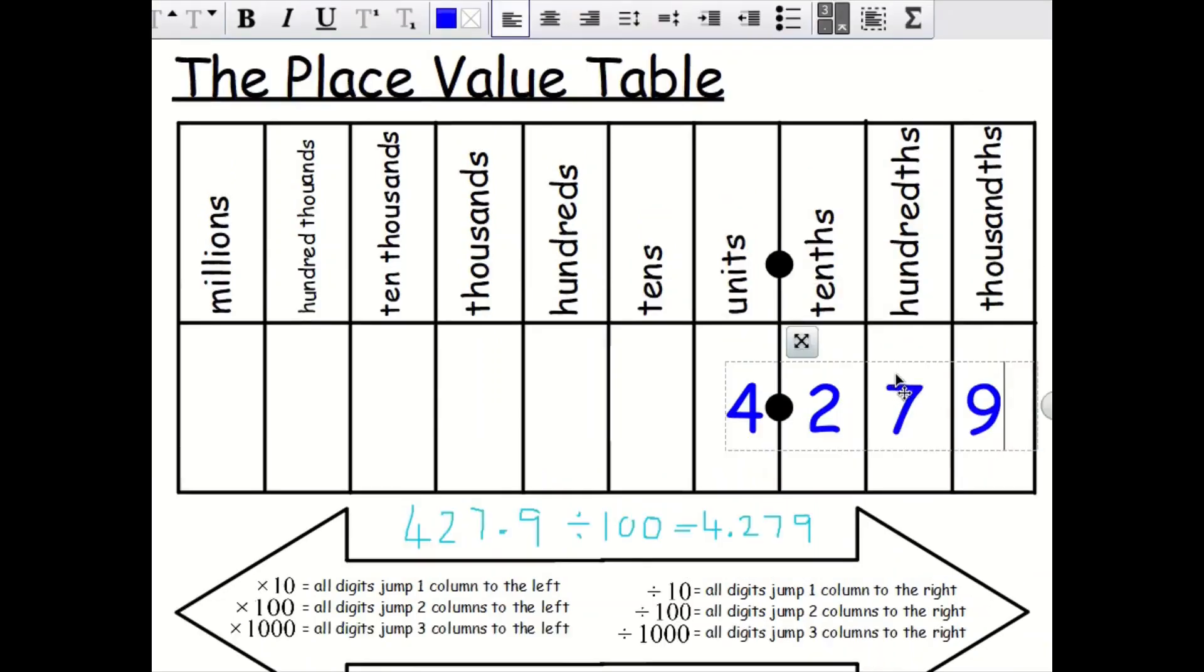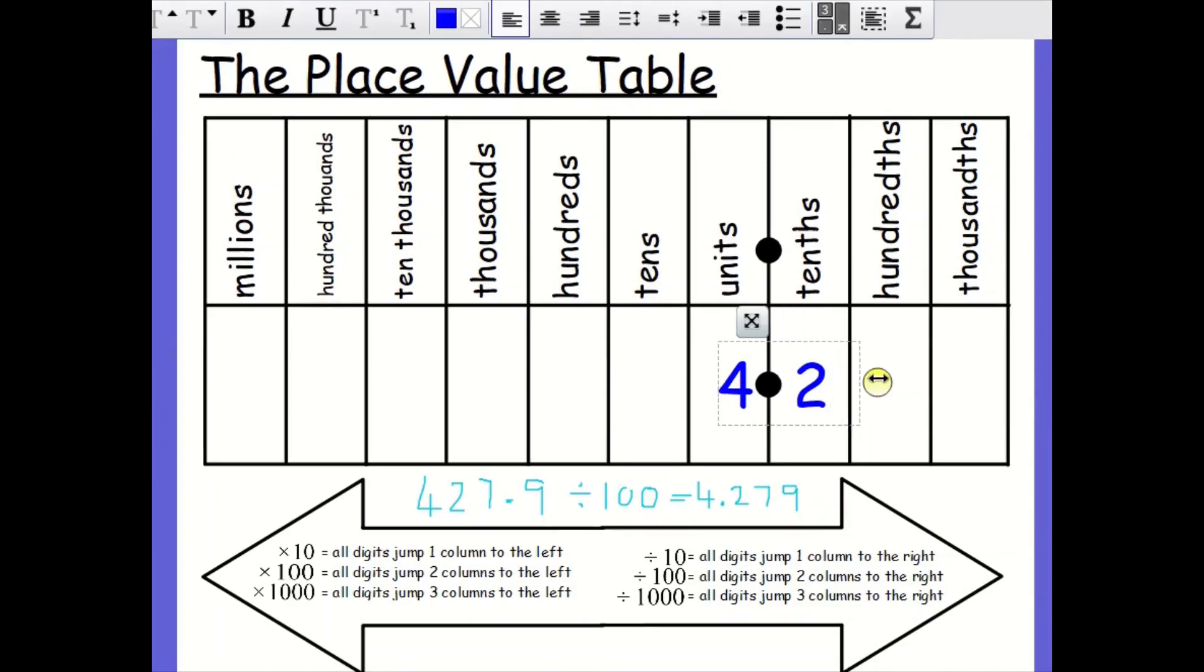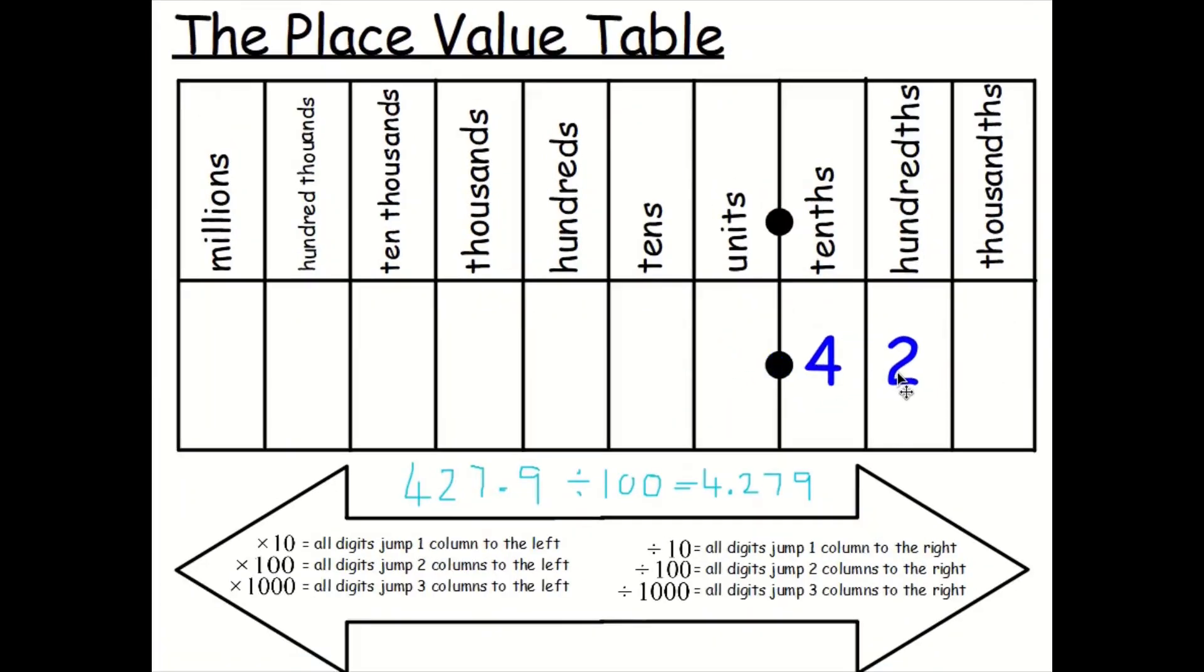Let's change this number a little bit. Let's get rid of those digits. Let's now have these two digits. What about this number now? We need to have some kind of place value holder here before the decimal point. This is 0.42. And I want to divide this by 10. All digits jump one column to the right. Let's take this now to the right. But what do we have to do to make sure we maintain this place value? We have to put zeros in, like so. This is 0.042.